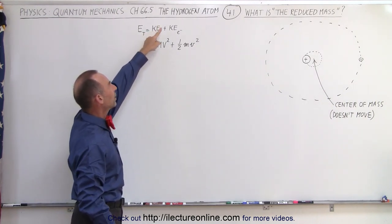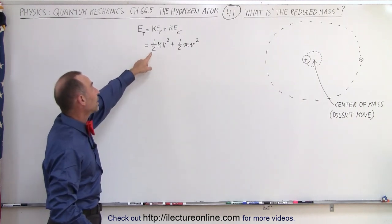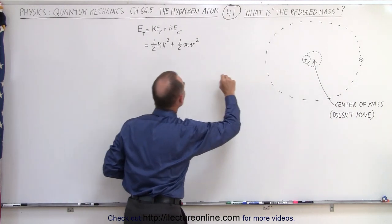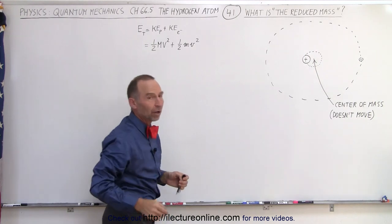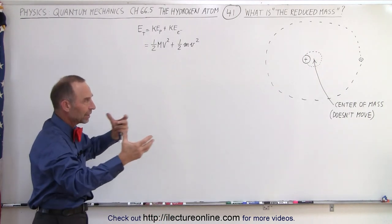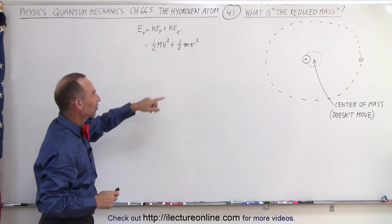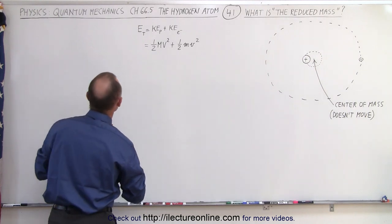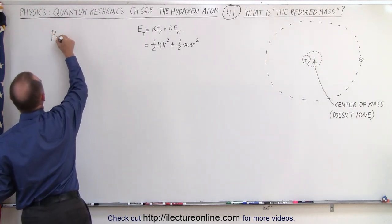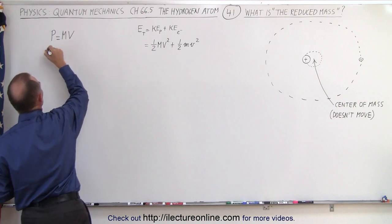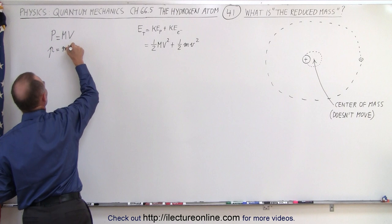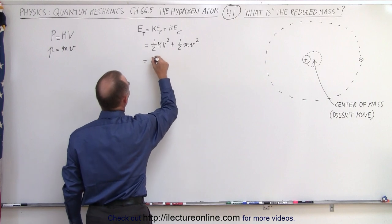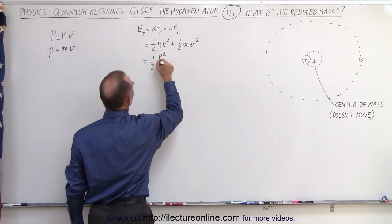We have the kinetic energy of the proton and the kinetic energy of the electron, each defined by one half mv squared. We're going to use large M and large V to signify the proton and small m and small v to signify the electron — not that the values are bigger, simply so we can keep them organized. Obviously the velocity of the electron is much bigger than the velocity of the proton. Now we're going to use the equation that momentum equals mass times velocity — big P for the proton and small p for the electron.